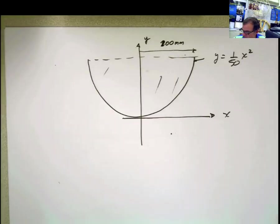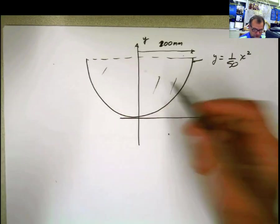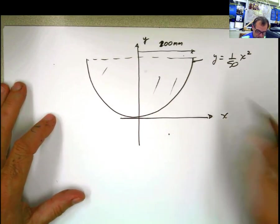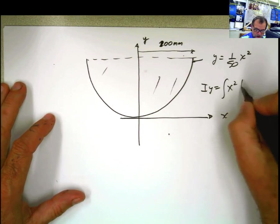OK. The shape that you were solving, or that we were solving before, it was this one. And before we calculated I sub x. Now I'm going to calculate I sub y. And I sub y, remember, is the integral of x squared dA.